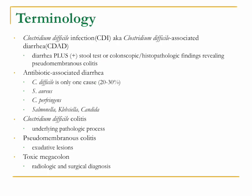Other causes of antibiotic-associated diarrhea include Staph aureus and Clostridium perfringens, and about 2% from organisms like Salmonella, Klebsiella, and Candida. You may also see 'Clostridium difficile colitis' referring to the underlying pathologic process the patient is experiencing. Pseudomembranous colitis is diagnosed by colonoscopic or histopathologic exam where exudative lesions are present. Toxic megacolon is radiologically or surgically diagnosed.